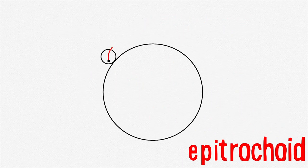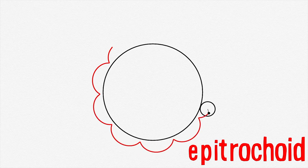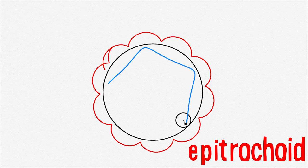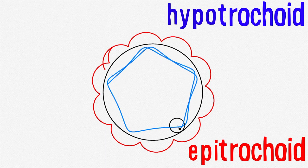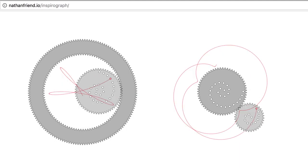But an epitrochoid is made when a disc rolls around the outside of a circle. Roll a disc inside a circle and what you've made is a hypotrochoid. These are the mathematical names for the curves you make when using a spirograph toy.